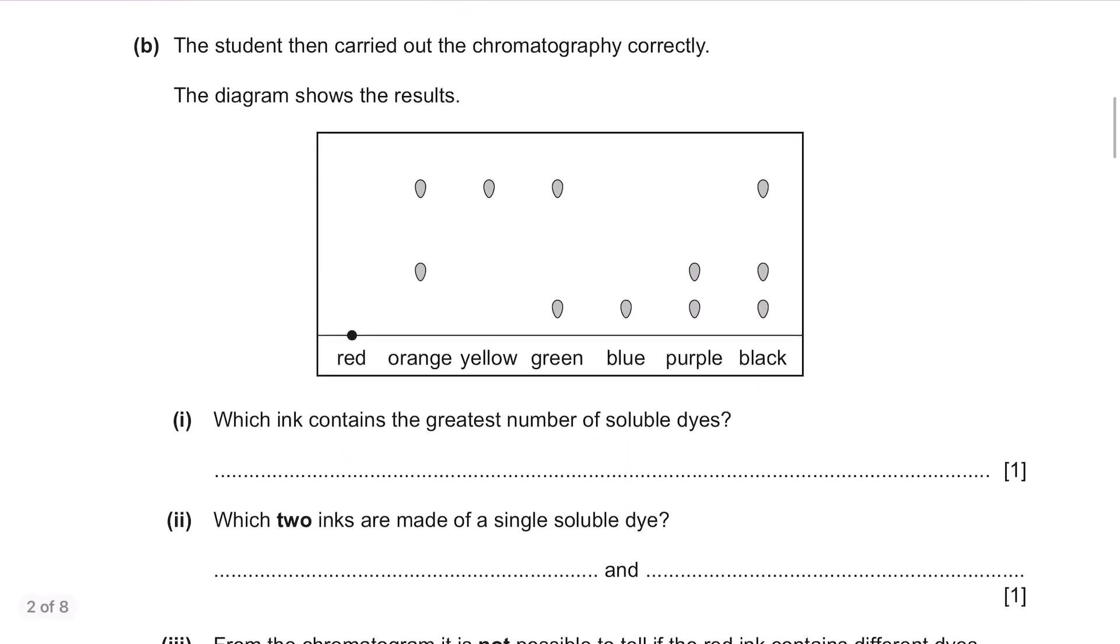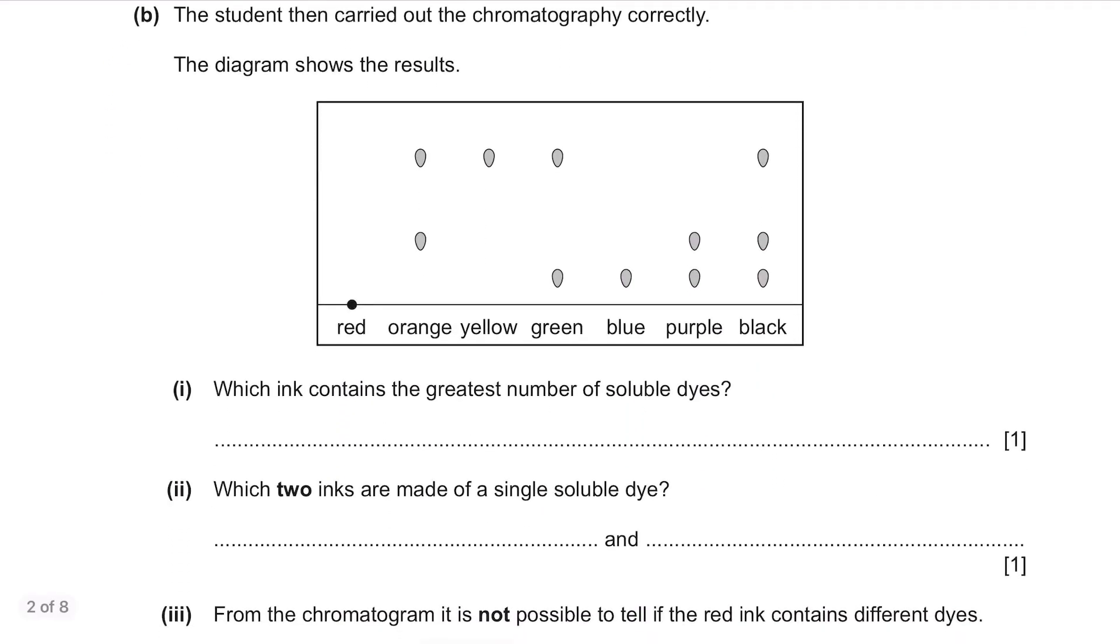Part B. The student then carried out the chromatography correctly. The diagram shows the results. Which ink contains the greatest number of soluble dyes? If it contains the greatest number of soluble dyes, it needs to have the greatest number of spots spread apart. In this chromatography paper, black has three dots so the answer is black.